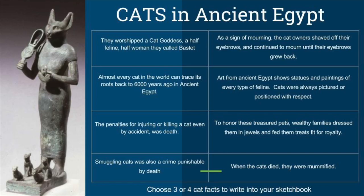Almost every cat in the world can trace its roots back to 6,000 years ago in ancient Egypt. The penalties for injuring or killing a cat, even by accident, was death.